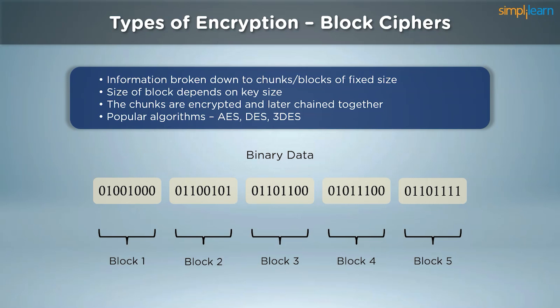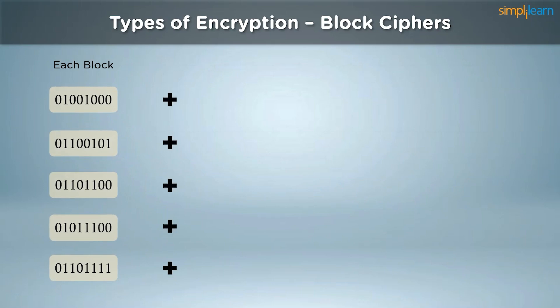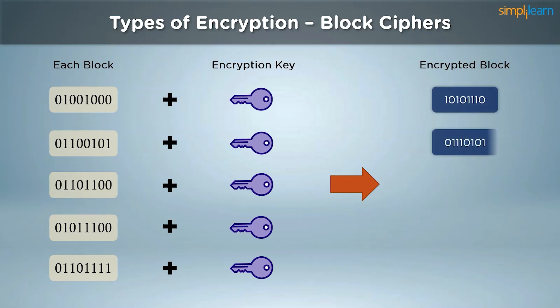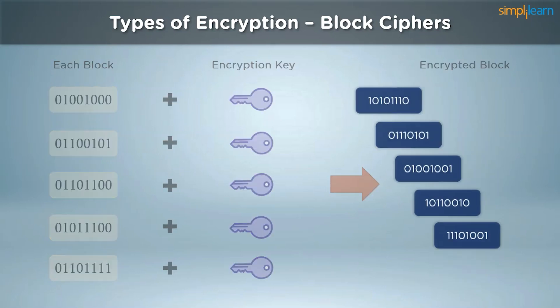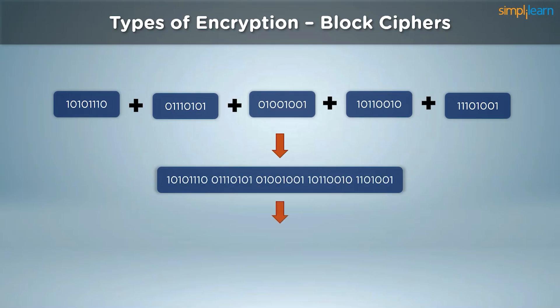Just like stream ciphers, the original plain text is converted into binary format before beginning the process. Once the conversion is complete, the blocks are passed through the encryption algorithm along with the encryption key, providing us with encrypted blocks of binary data. Once these blocks are combined, we get a final binary string, which is then converted into hexadecimal format to get our ciphertext. Today, the most popular symmetric key algorithms — AES, DES, and 3DES — are all block cipher methodology subsets.